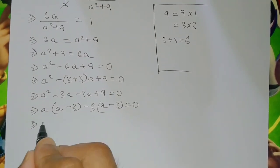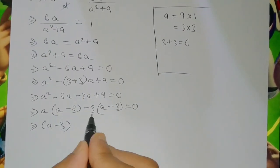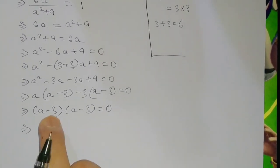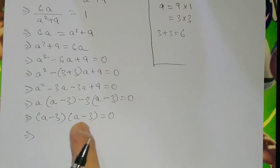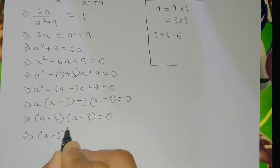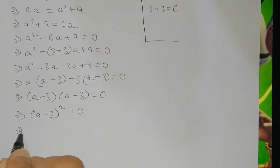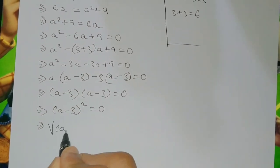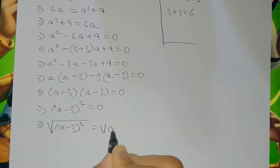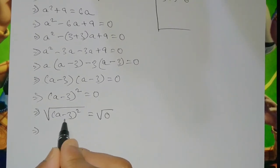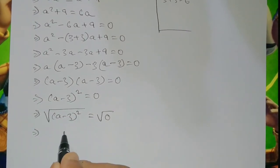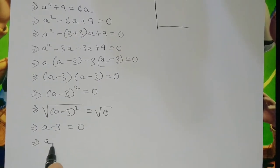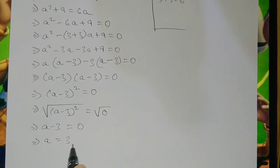Taking the square root of both sides: square root of (a - 3)² equals square root of 0. The square and square root cancel, giving a - 3 = 0. Therefore a equals 3.